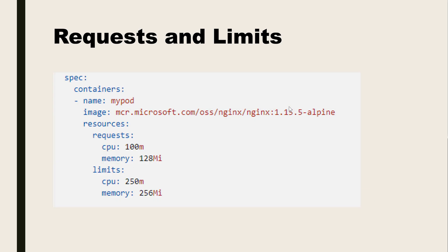Here is a code snippet showing how to define the request and the limit. In the container specification, under the resources section, you can see requests and limits are defined. You can define CPU, memory, or both. This is how you define requests and limits while creating a deployment or pods.